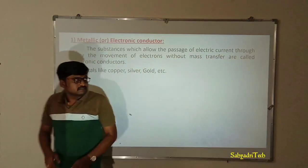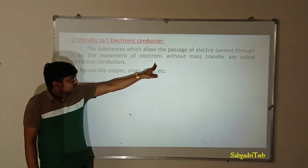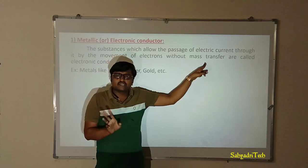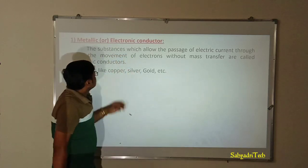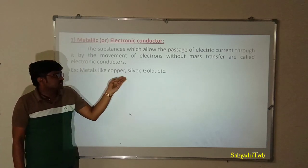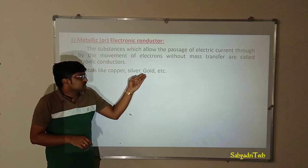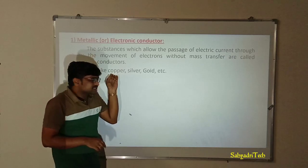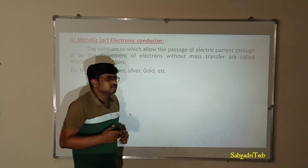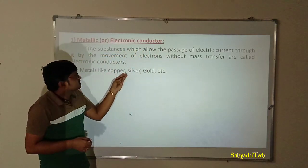Metals are the examples for metallic conductors. Examples include copper, silver, and gold, which are well-known examples for metallic conductors. Regarding usage, copper is used most frequently. Silver and gold are not commonly used as conductors because of their expensive nature.